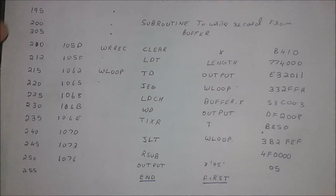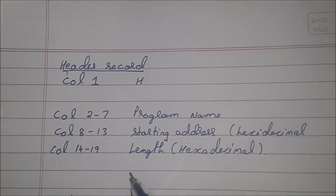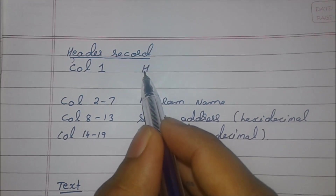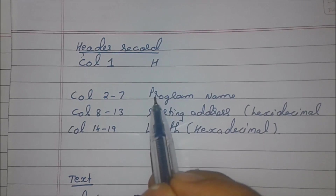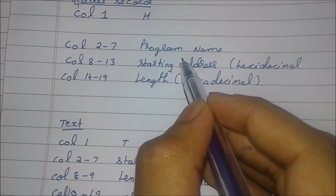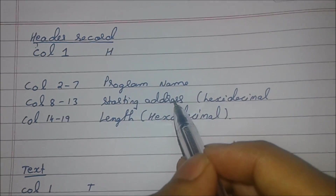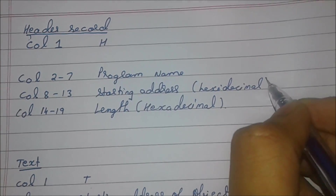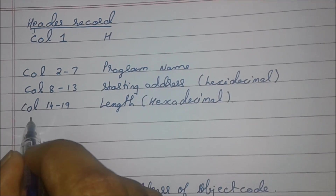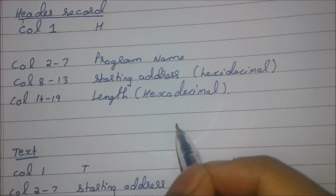So now we will convert it one by one. For that we have some rules. For the header record: the first column will be H (alphabet H), and column numbers 2 to 7 will be the program name. Column numbers 8 to 13 will be the starting address — note that it is in hexadecimal form. Column numbers 14 to 19 will be the length, and again it is in hexadecimal form.